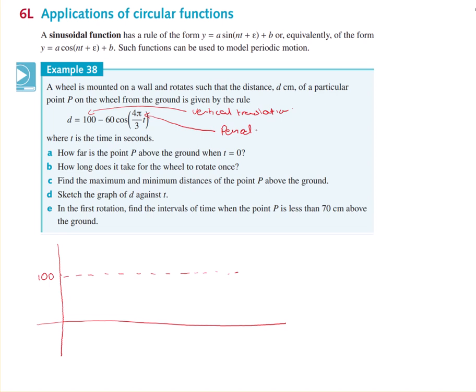So the period equals 2π on n. So 2π over 4π on 3. So that's 2π on 1. Turn the fraction upside down by 3 on 4π. The π's cancel out. 3 times 2 is 6. So you've got 6 on 4 so your period is 3 over 2.